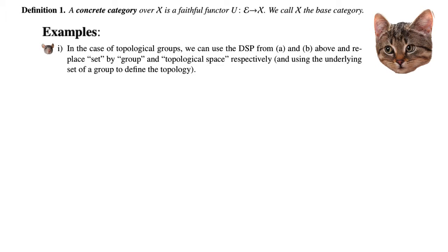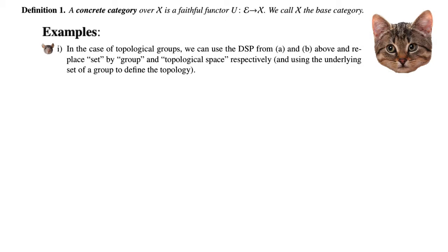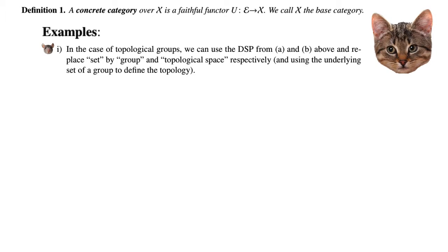In the case of topological groups, we can use the DSP from examples A and B above and replace Set by Group and topological space respectively. In this case, we use the underlying set of the group to define the topology.